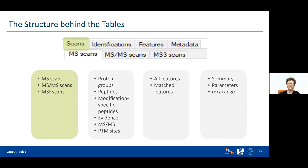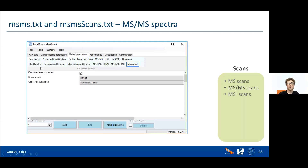That was the identifications part. Now the scans section, which is typically more interesting for people running machines who want to do quality control. Here we get information about the different scan types: first MS, second MS, third MS — typically first and second.